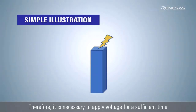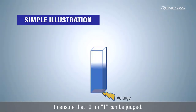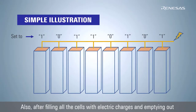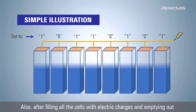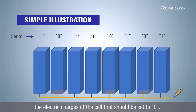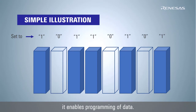It is necessary to apply voltage for a sufficient time to ensure that zero or one can be judged. Also, after filling all the cells with electric charges and emptying out the electric charges of the cells that should be set to zero, it enables programming of data. These are the principles of the flash memory.